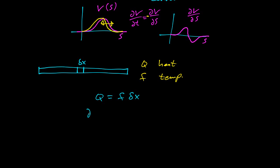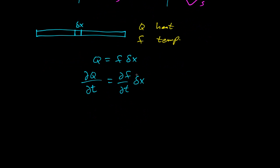And we can immediately take a derivative here. So partial of q with respect to t is partial of f with respect to t delta x. So just derivative with respect to time. So that's our basic equation. Now, how does heat actually flow? So what do we know?